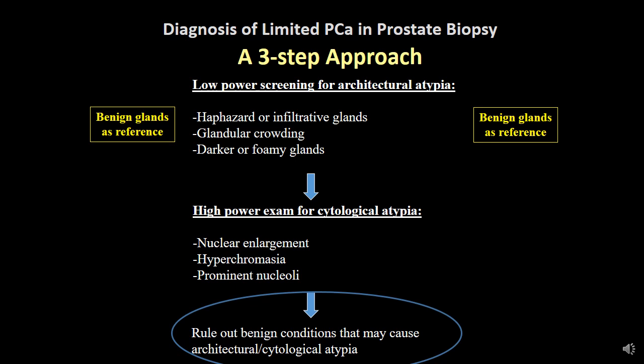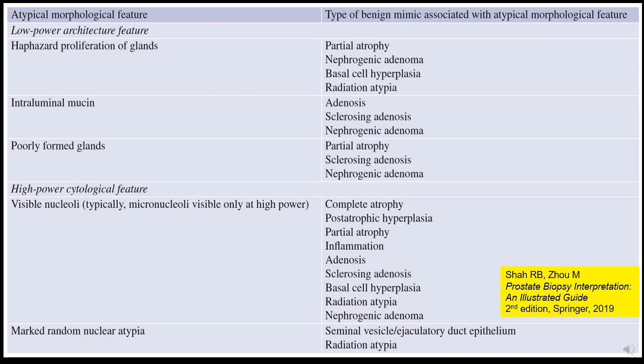We are also going to keep benign glands as our reference point. These are very important points to keep in mind, because benign mimickers are known to give you several architectural and cytological atypical features. On the right side you have various benign mimickers of prostate cancer and on the left side you see different types of low-power architectural and high-power cytological atypia features. It is very important not to get stuck on one particular atypia feature when you encounter a lesion.